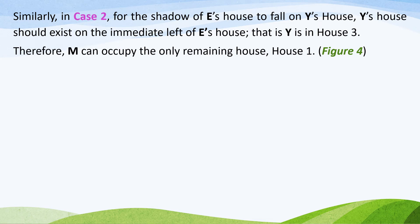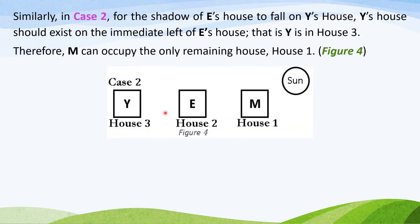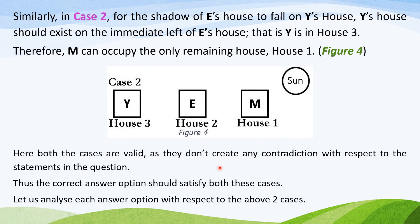Similarly, let us consider case 2 where E occupies the middle house. Here, for the shadow of E's house to fall on Y's house, Y's house should be located on the immediate left of E's house, that is, Y occupies house 3. Therefore, M occupies the only remaining house, that is, house 1. Both cases are valid as they don't create any contradiction with respect to the statements in the question. Thus, the correct answer option should satisfy both these cases.